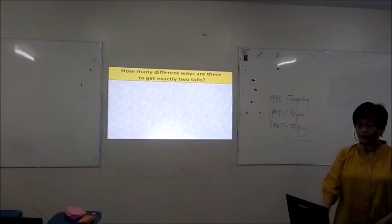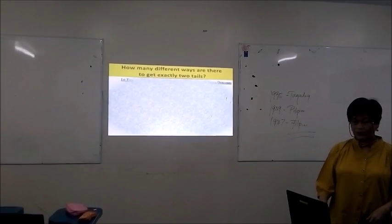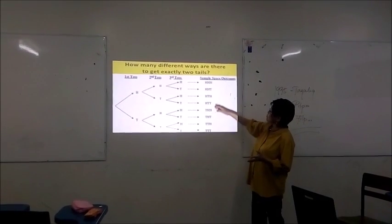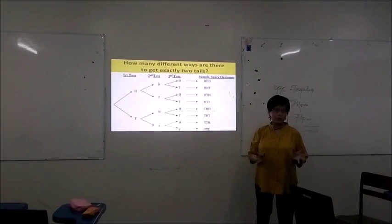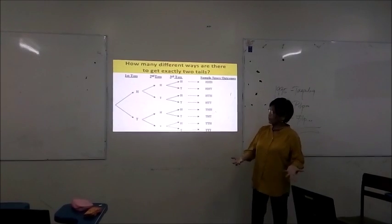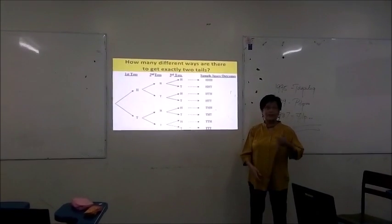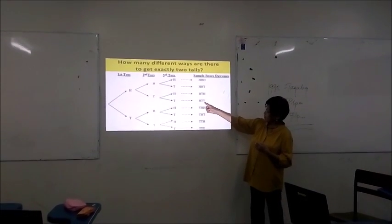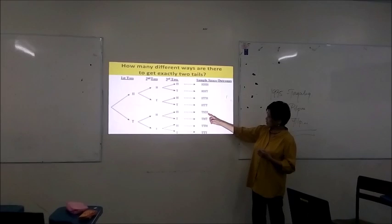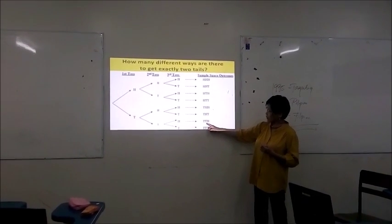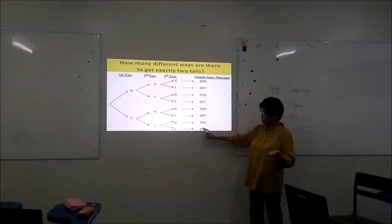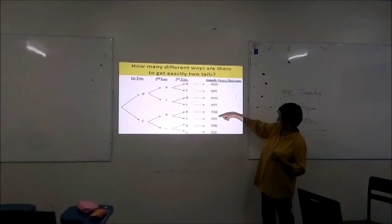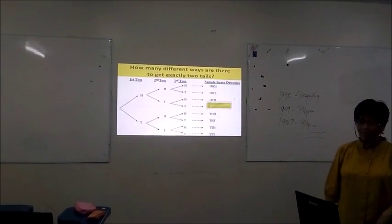The second question is: how many different ways are there to get exactly two tails? From the sample space outcomes, we count those with exactly two tails. When we say exactly two, it means not less than two and not more than two. Looking at the outcomes, we find three of them have exactly two tails, while TTT has three tails so it does not count. The answer is three outcomes.